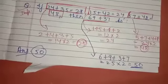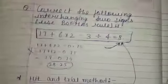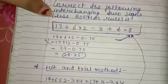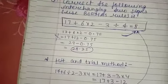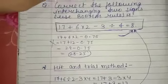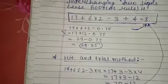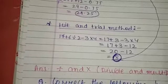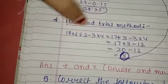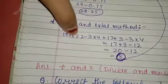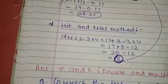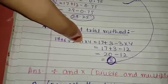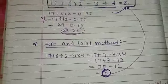Important question: correct the following by interchanging two signs using BODMAS rule. The question is: 17 + 6 × 2 − 3 ÷ 4 = 8. We'll use the hit and trial method. Apply BODMAS — division first: 17 + 6 × 2 − 3 ÷ 4. Dividing: 3÷... let's work through it. 17 + 3...